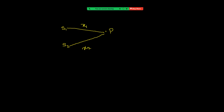The phase of the first sound wave at point P is written as phi1, where phi1 = ωt − kx1 + α1. This is the phase of the sound at point P because of the first sound. In the same way, the phase of the second sound at point P is phi2 = ωt − kx2 + α2.